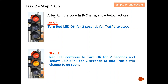Before we talk about the programming, let's discuss the problem statement. We have four steps. After we run the code in PyCharm, these four steps must be in place. Step one: we turn the red LED on for three seconds. The purpose is for traffic to stop — when you see a red LED, it indicates all traffic must stop at that direction.